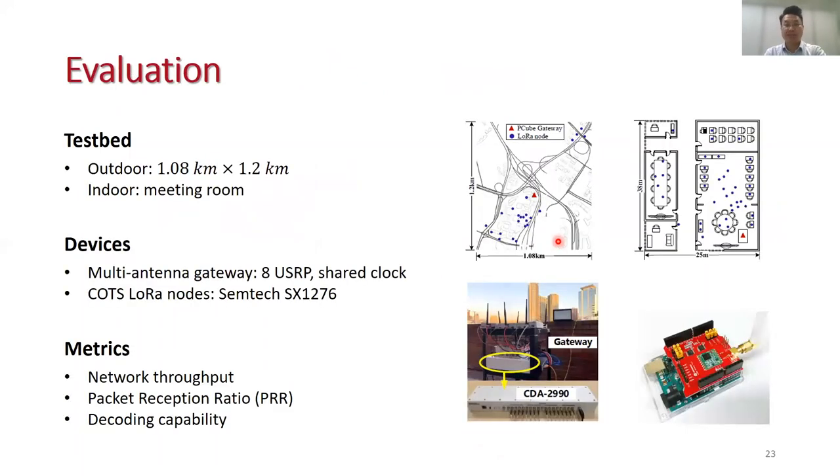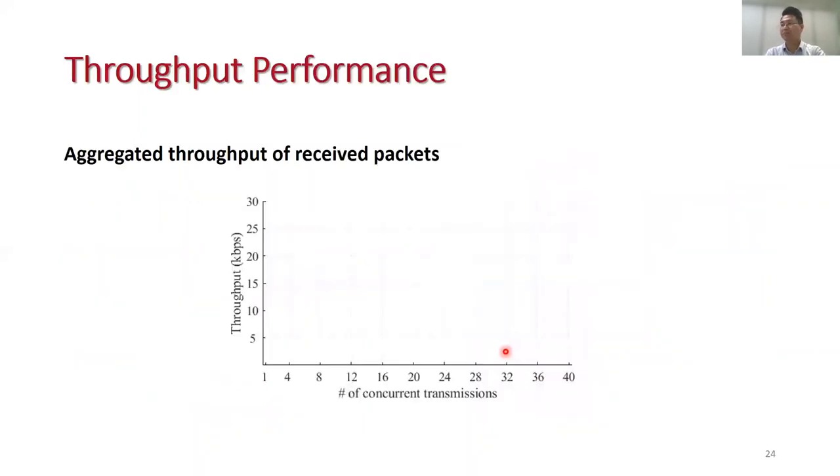We implemented a prototype system of PQueue and performed both indoor and outdoor experiments to evaluate the performance of PQueue. This figure shows our multi-antenna gateway, which is composed of eight USRPs. All these USRPs will have the same clock source.